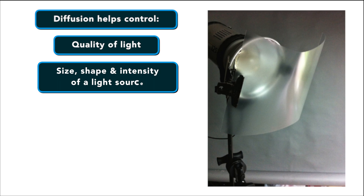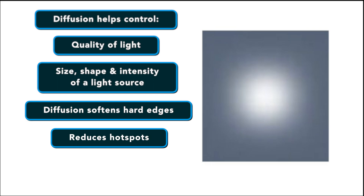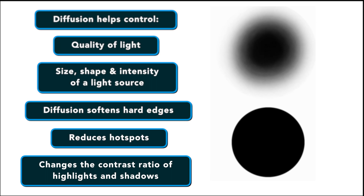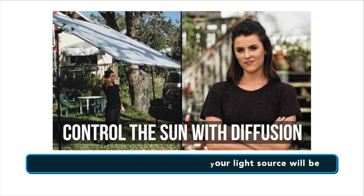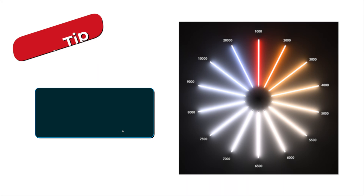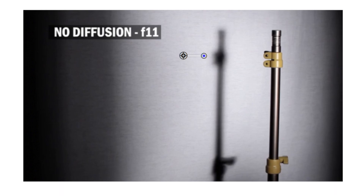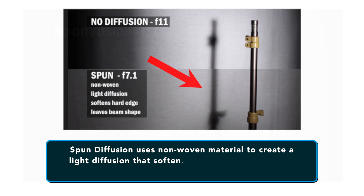Next are diffusion gels. Diffusion helps control the quality of light, as well as the size, shape and intensity of your light source. It can soften hard edges, reduce the hot spot from a light, and change the contrast ratio of lights and shadows when lighting a subject. The thicker the diffusion, the softer your light source will be. Keep in mind that diffusion can shift the color temperature of your lights. The most important types of diffusion include spun, frost, white, Rolex, silk and grid cloth. Let's take a look at a setup with a hard light producing a shadow and see how different types of diffusion affect it.